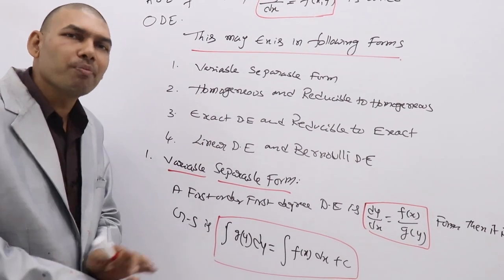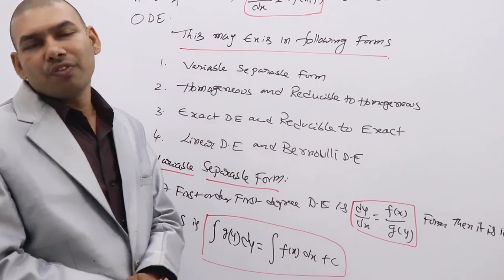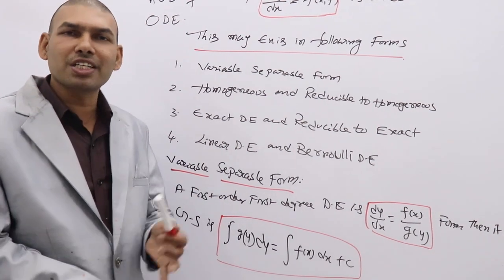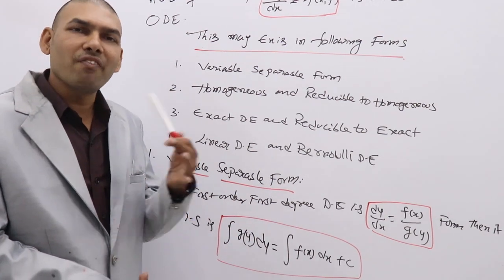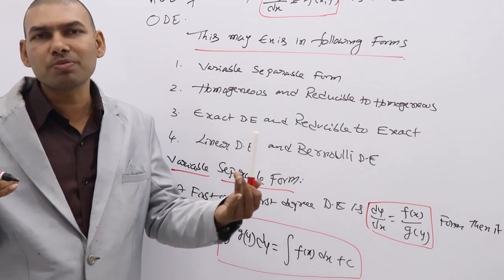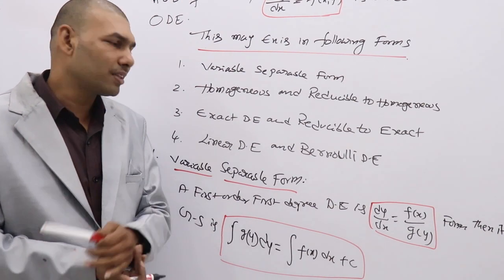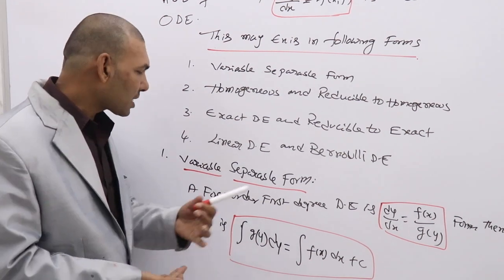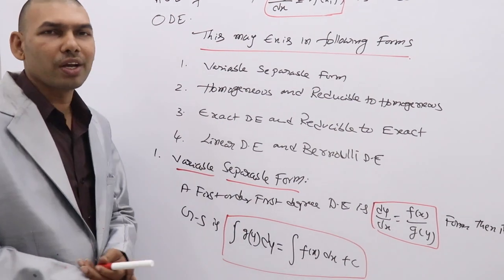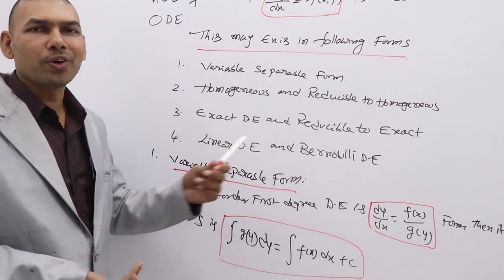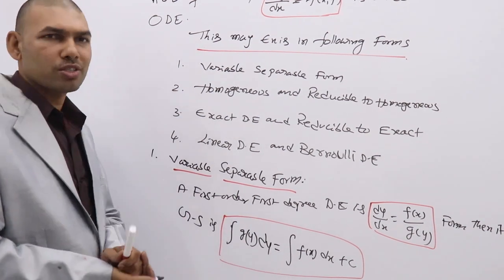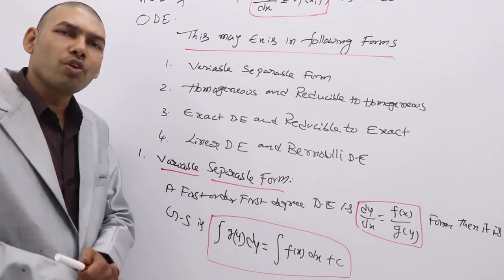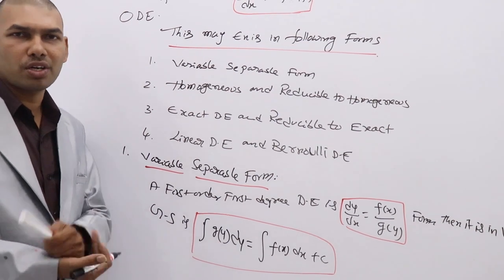Variable separable is a very simple form among first order first degree DEs, which everyone can easily identify — you can easily separate x terms and y terms. We will discuss a few problems on variable separable to understand how to separate and find the general solution. This is also important for short answer questions, where one problem from variable separable may be expected.